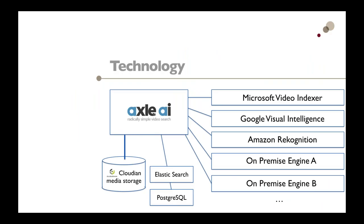Axel AI uses state-of-the-art web technologies like Elasticsearch and Postgres, and adds a variety of artificial intelligence engines. Initial support has been for Microsoft and Google; we're adding Amazon and also on-premise engines so you don't have to send proxies to the cloud. Axel creates low-resolution versions — proxies — of all material it finds, whether video, audio, images, or PDFs. Those proxies are sent off for analysis, and metadata comes back from cloud or on-premise services describing speech-to-text, facial recognition, object recognition, and text recognition.